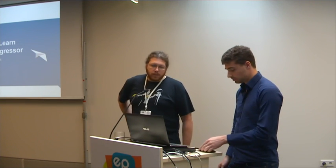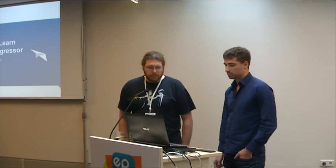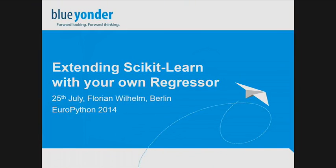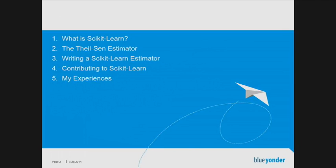Hello everybody. In my talk on extending scikit-learn with your own regressor, I'll first give a short introduction to scikit-learn. Then I'll talk about a robust estimator called Theil-Sen, which is not yet included in scikit-learn. Using this as an example, I'll show how you can implement your own estimator and extend scikit-learn. Then I'll talk about what you need to consider if you want to contribute an estimator to scikit-learn.